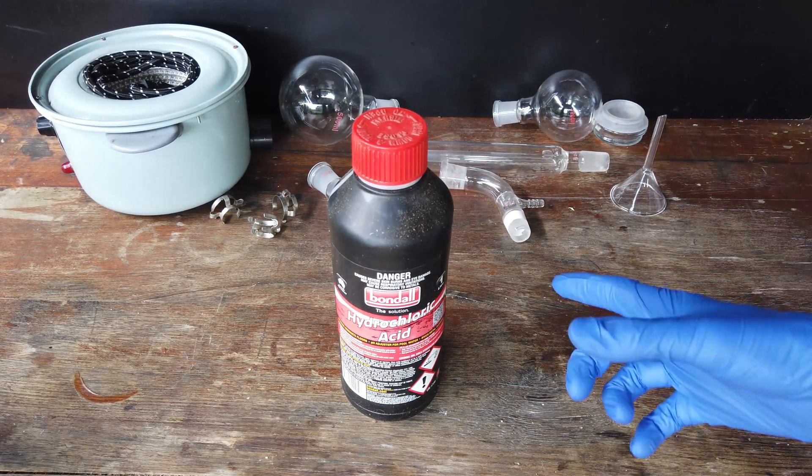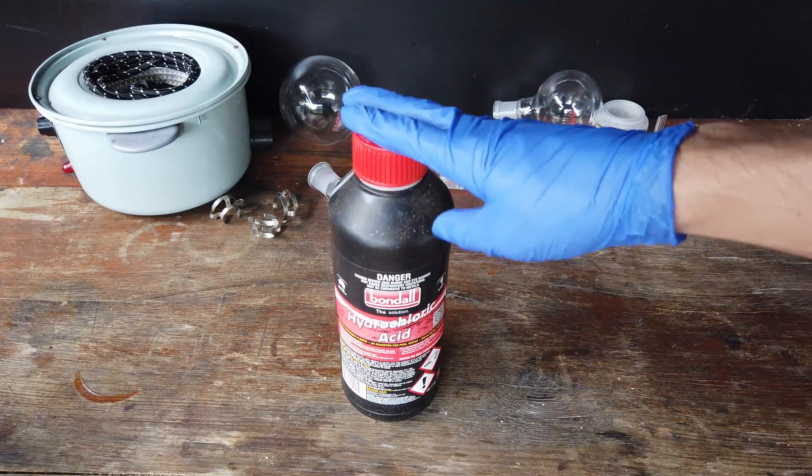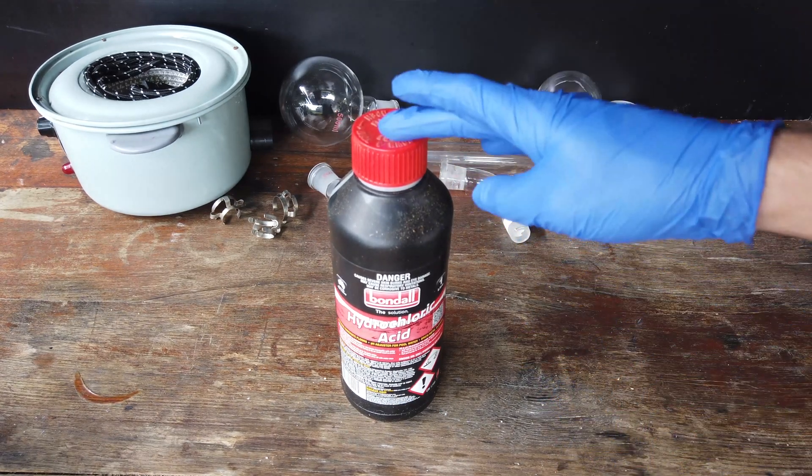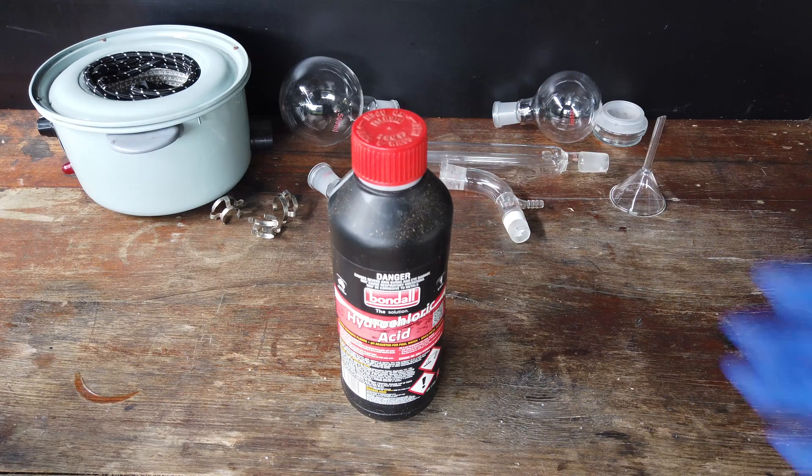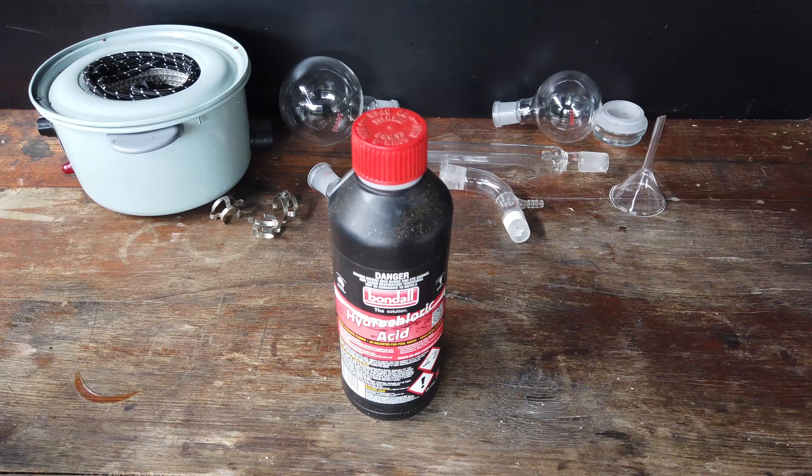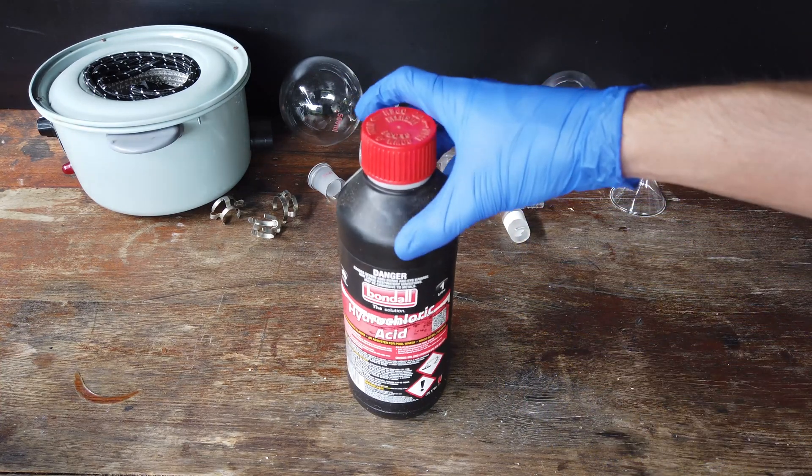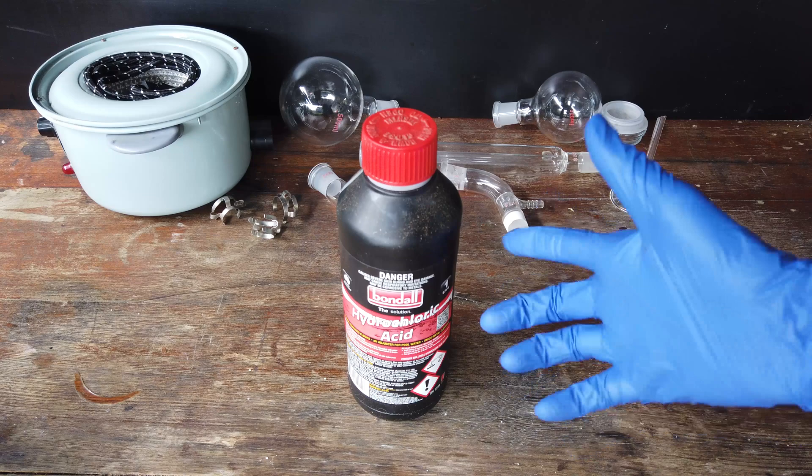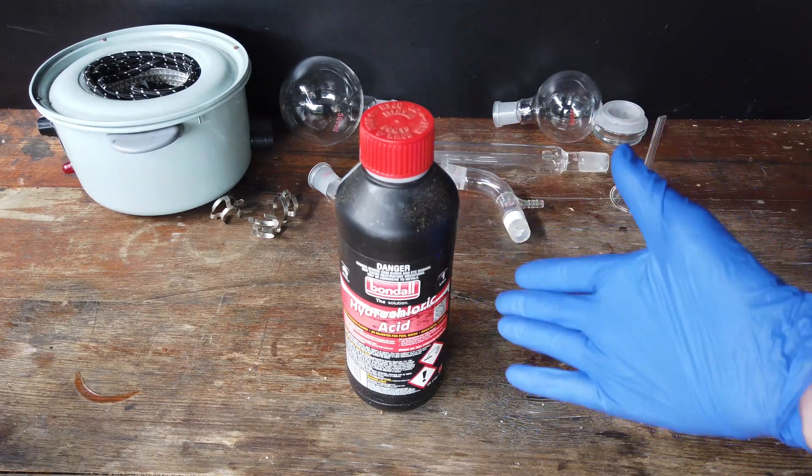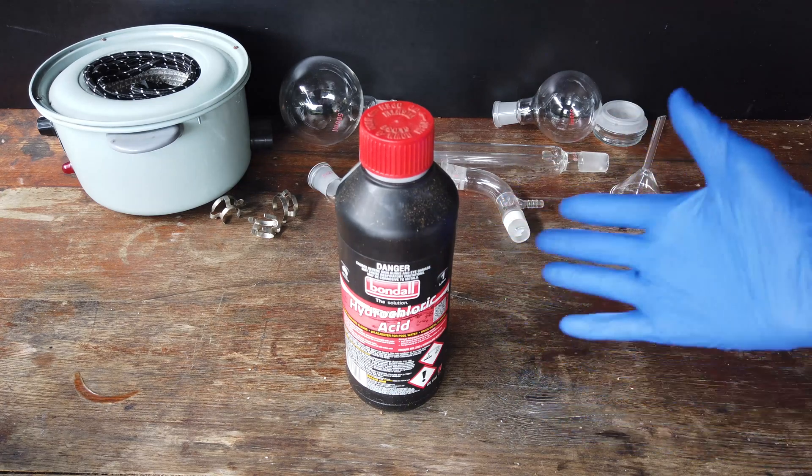There is, however, one issue with the hydrochloric acid that I get from the hardware store, and that is the fact that it contains some impurities in there. People tell me that there's iron in solution, which gives it a slight yellow color, which we will have a look at later. And additionally, I've found that this particular brand of hydrochloric acid that I can get has some kind of redox active species in solution as well.